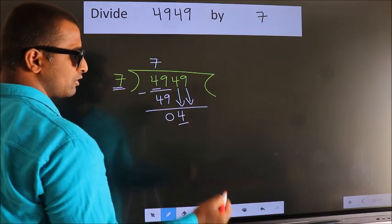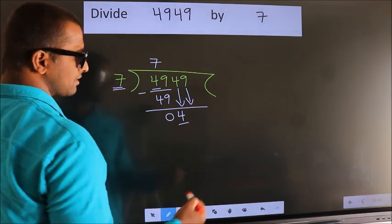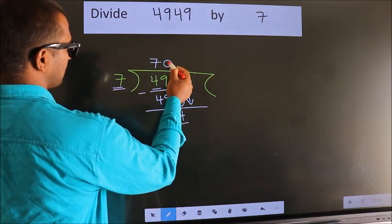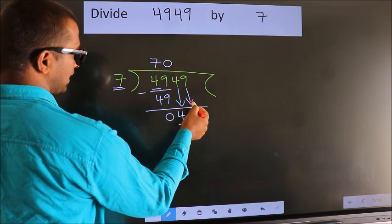And the rule to bring down the second number is, put 0 here. Then only we can bring down this number. So 49.